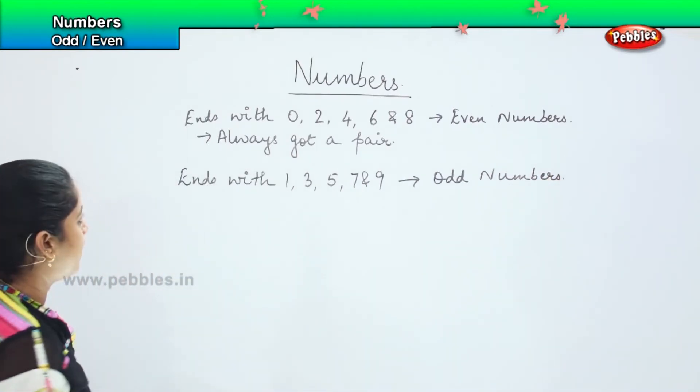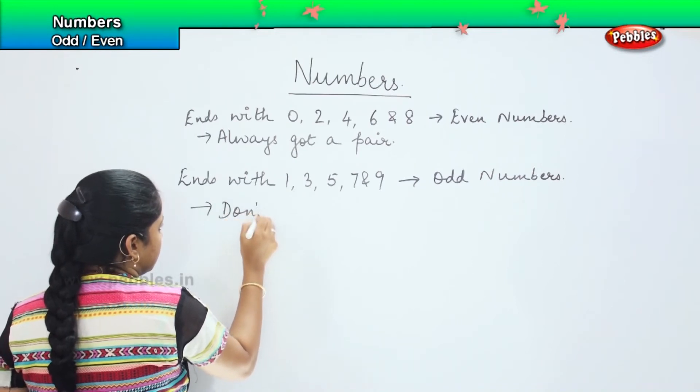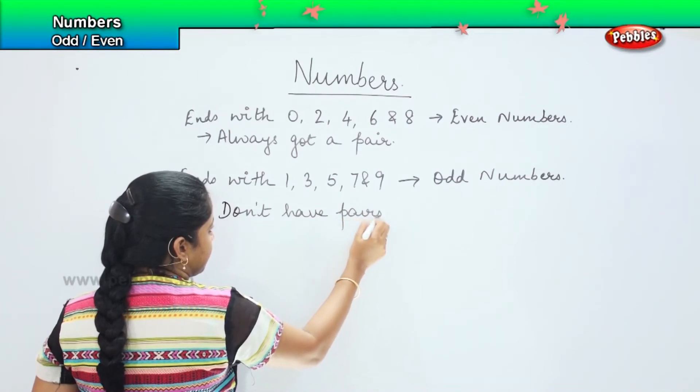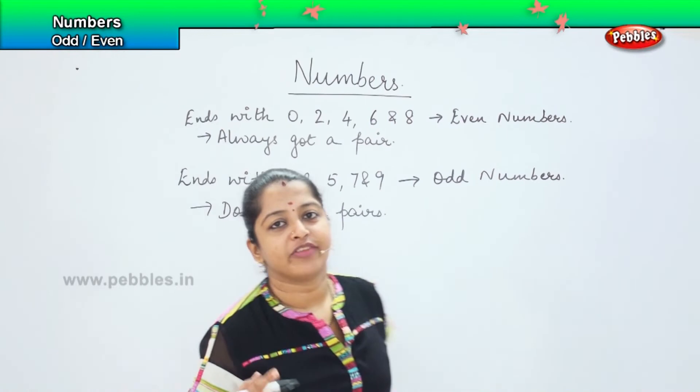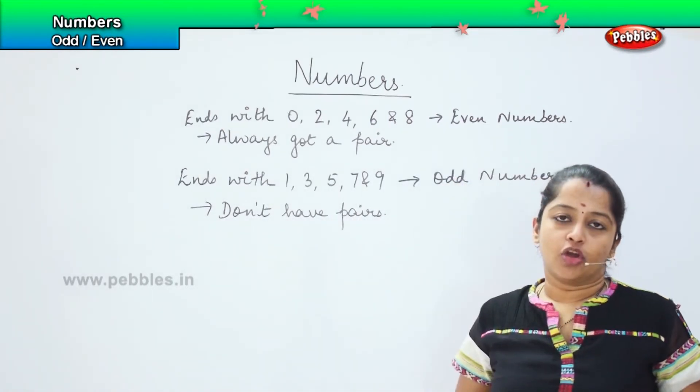Okay? And these numbers don't have pairs. One of them will always be single. You cannot find a pair with the odd numbers.